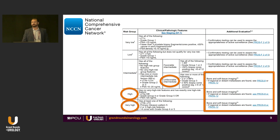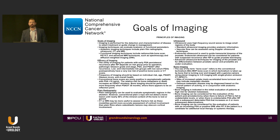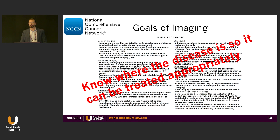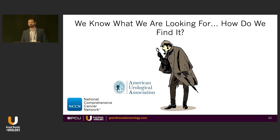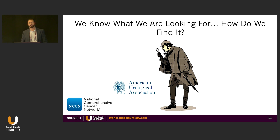So what do we do — how do we look? The NCCN recommends that for unfavorable, high, and very high risk disease you should do some imaging. They say bone scan and CT scans, but that's somewhat antiquated. The goals of imaging are essentially to know where the disease is so we can treat it appropriately. This is really important for a radiation oncologist because we dose-paint, we give more dose to the tumors, especially if there are positive lymph nodes. We look to the NCCN or the AUA.